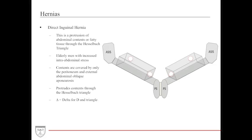A direct inguinal hernia occurs when abdominal contents or fatty tissue protrude through the Hesselbach triangle itself. This happens in elderly men with increased intra-abdominal stress because the wall is being torn open. The contents are only covered by the peritoneum and the external oblique aponeurosis — this is very high yield and often tested. A helpful mnemonic: 'D' for direct, 'D' for delta (triangle in Greek), so direct goes through the Hesselbach triangle.